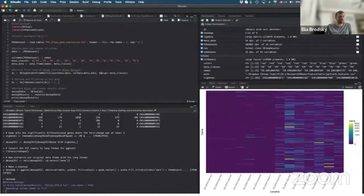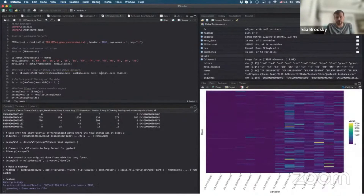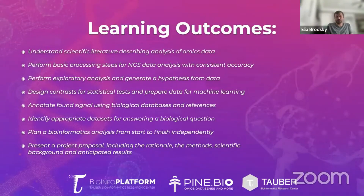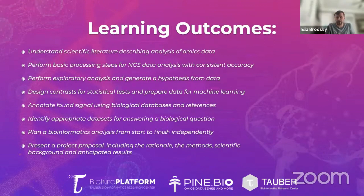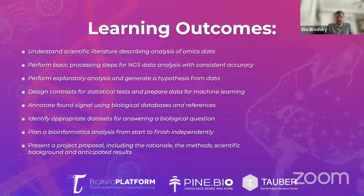As a result, you will accumulate a repository of your own code that you can use in the future for your own research or career. The learning outcomes we envision include: learning to appreciate and understand scientific literature describing analysis of various types of omics data — including genomics, transcriptomics, and metagenomics — knowing how to perform basic processing steps for such data with consistent accuracy, being able to perform exploratory analysis and generate hypotheses from data, knowing how to design contrasts for statistical tests, prepare data for machine learning, annotate found signals using biological databases, and identify appropriate data sets for answering specific biological questions.